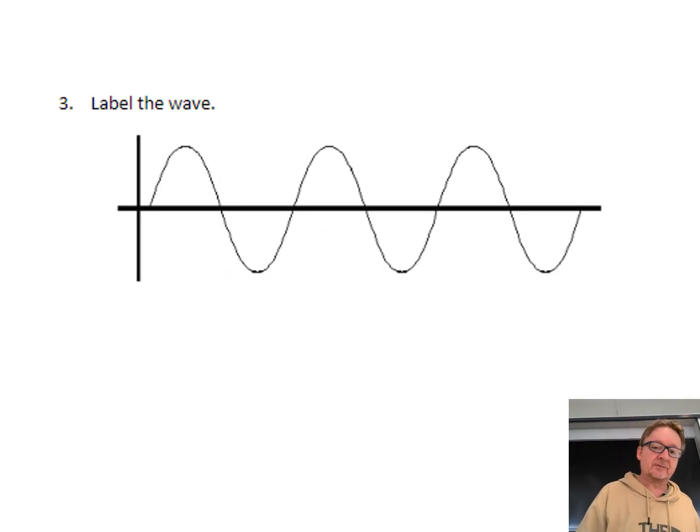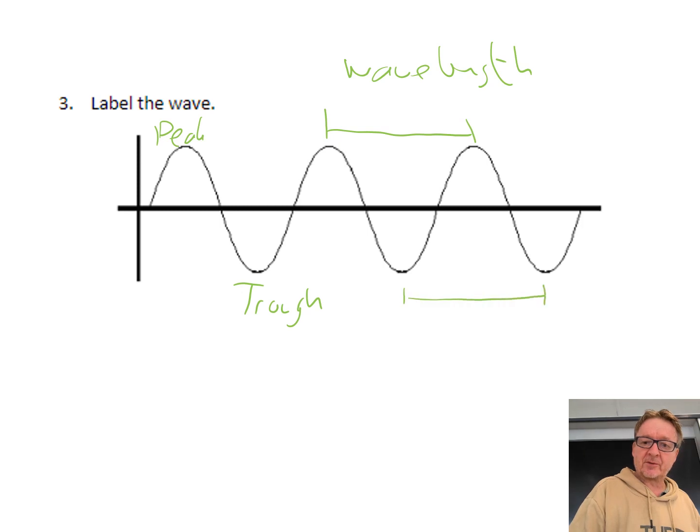Label the wave. So what we've got here is peak, trough. From peak to peak is a wavelength. You could also have trough to trough is also a wavelength. And then we've got amplitude, which is the height of the actual wave itself.